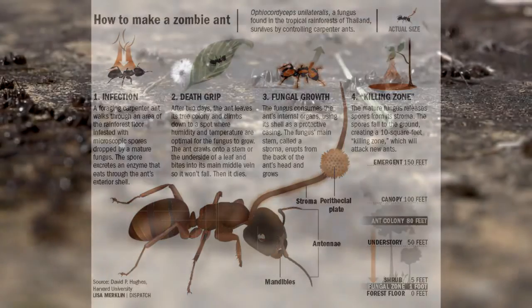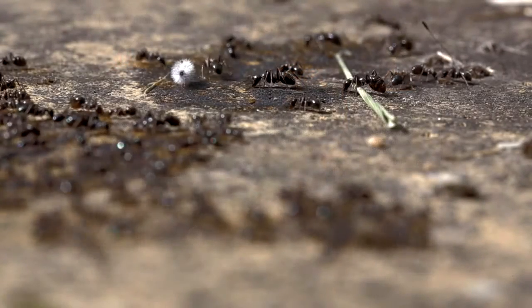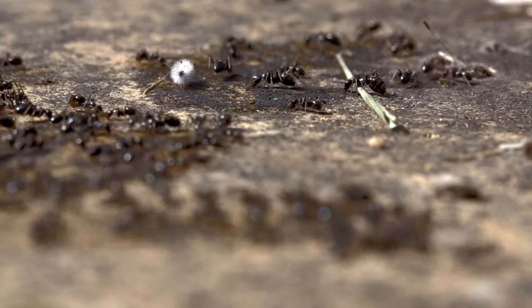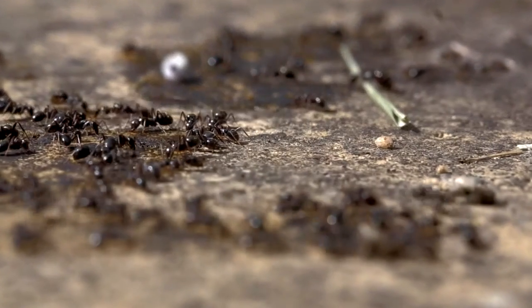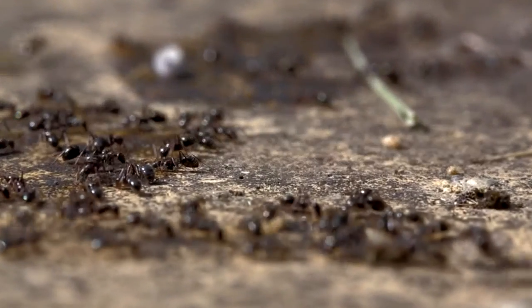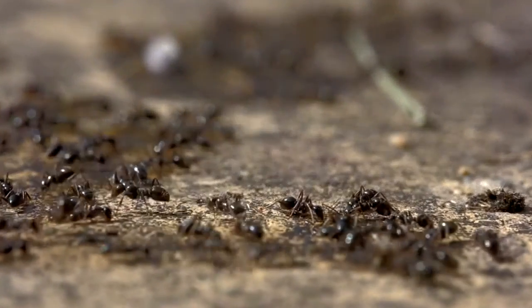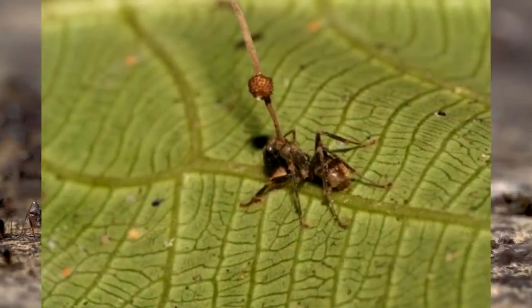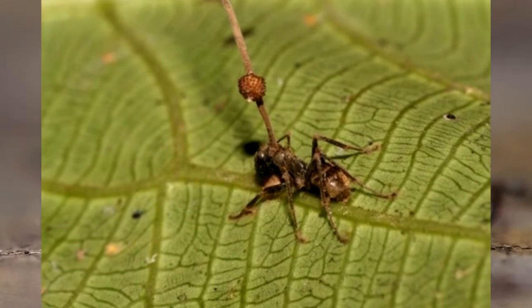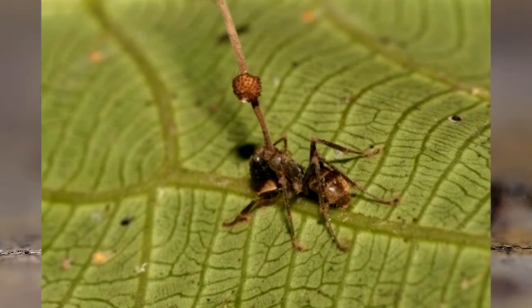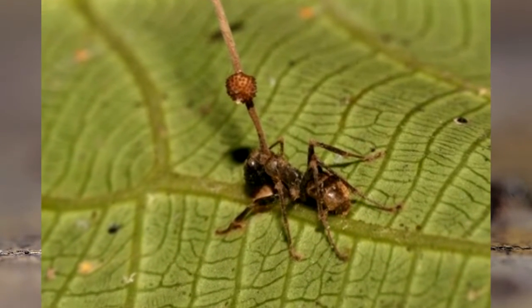Once there, the fungus makes them grip the vein of a leaf very tightly with their mandibles. Guess where fungi like to live and grow? Yes — under leaves and close to the ground. So they control the ant's brain to get to their ideal area and position.